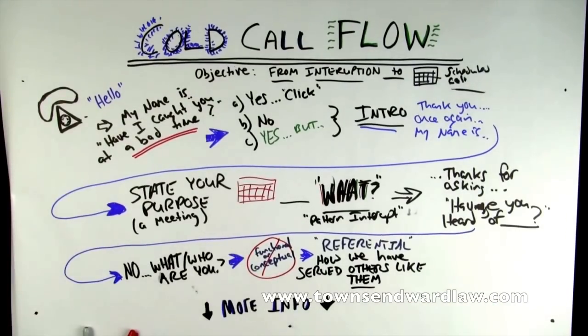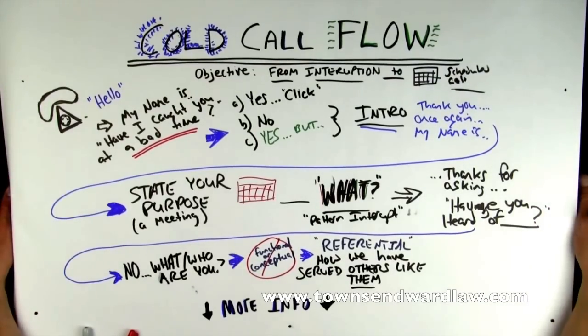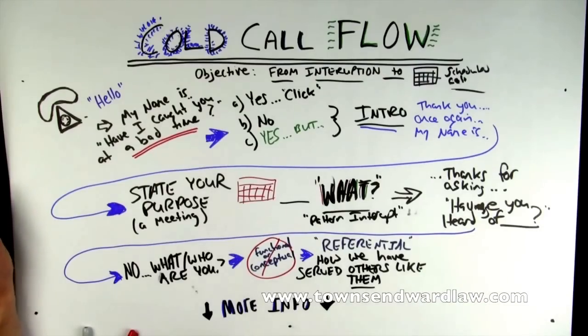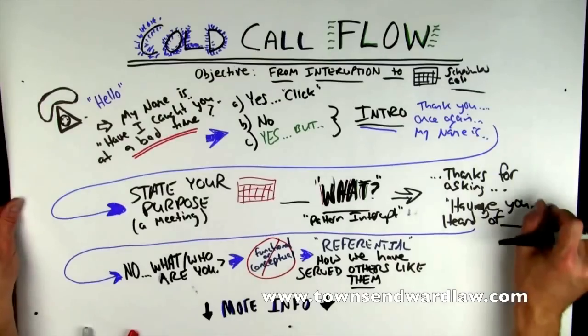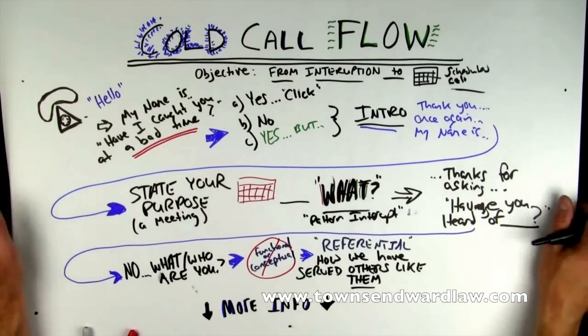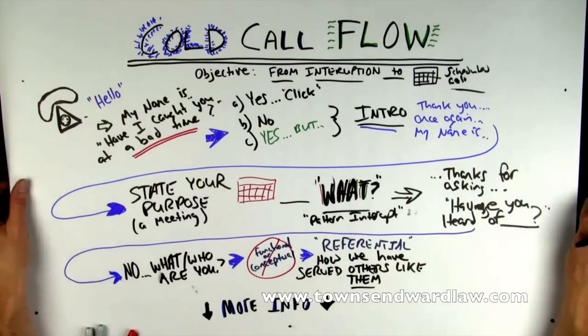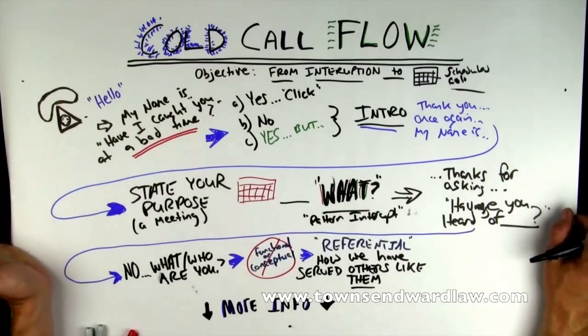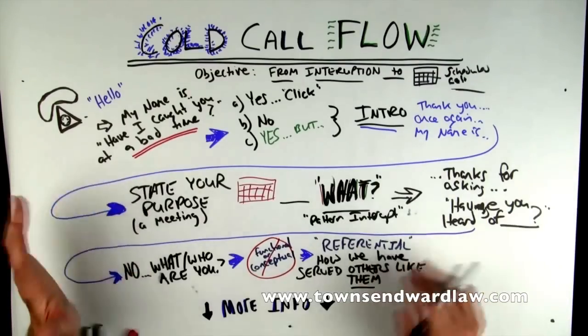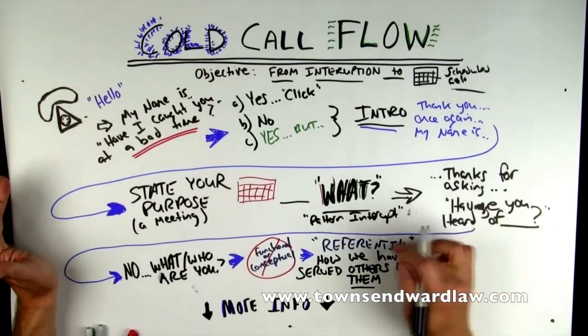By basically explaining to them how we have served others like them, with the emphasis on them. Really, really important. By way of example, when somebody says, Townsend, what do you do? Instead of saying I help people implement Salesforce or I teach people how to make cold calls, what I tend to say is I work with CEOs, founders, principals, owners of companies in the one to ten million dollar range who are trying to make the leap from entrepreneurial selling to professional selling. I'm referring to others like them.